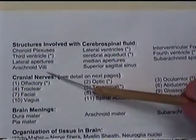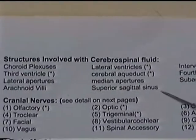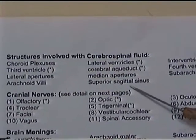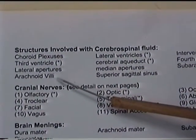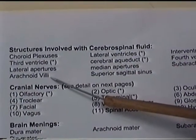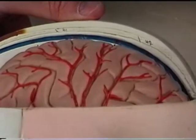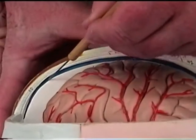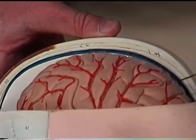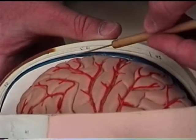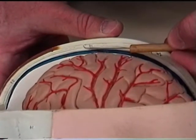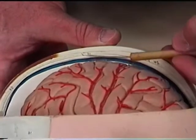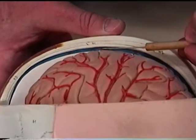We'll talk about the arachnoid villi and the superior sagittal sinus, because this is the blood vessel in which the fluid is reabsorbed. The arachnoid villi are extensions of the arachnoid mater into that blood vessel. In the lab, you can't really see the arachnoid villi, but this large blue blood vessel sitting in the longitudinal fissure of the brain is the superior sagittal sinus. On the inside of the skull, the groove called the superior sagittal sulcus was created by this blood vessel — the sinus.